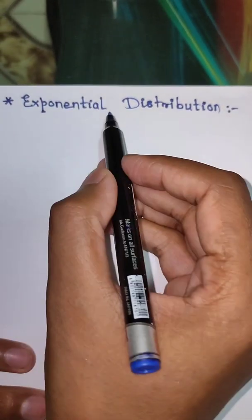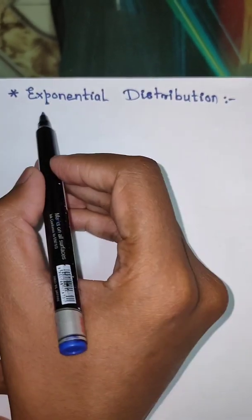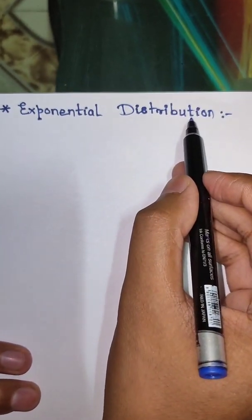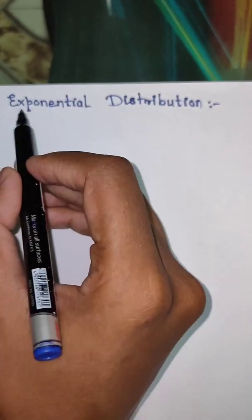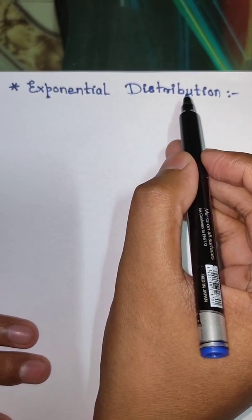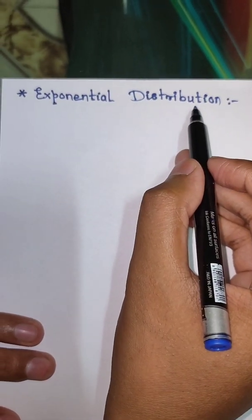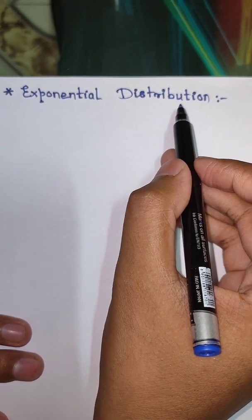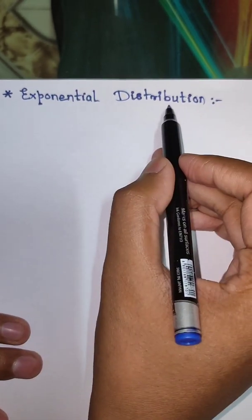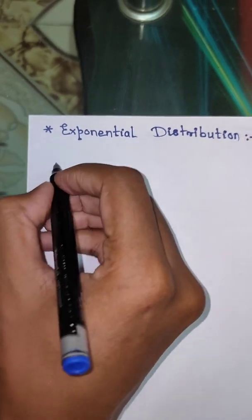Hello everyone, my name is Adish and the topic of this learning video is exponential distribution. In this learning video, we are going to see the definition of exponential distribution, properties of exponential distribution namely mean, variance, standard deviation, and moment generating function, and also what type of results can be made on the basis of the properties of exponential distribution. So let us start with the definition.